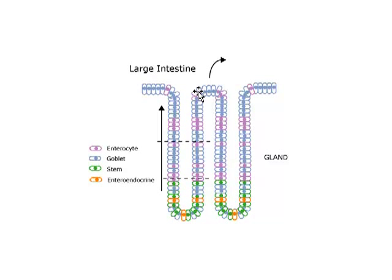The structure of the glands is similar but not identical to those in the small intestine. The chief difference is the proportion of cells in the gland which are enterocytes versus those which are goblet cells, with goblet cells greatly exceeding the number of enterocytes, particularly as we move to more distal parts of the colon. The upper and middle thirds of the gland are made up of enterocytes and goblet cells, with stem cells and enteroendocrine cells being restricted largely to the lowest third of the gland.